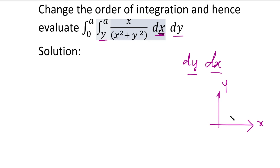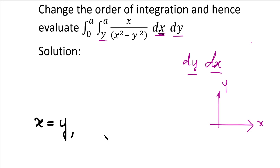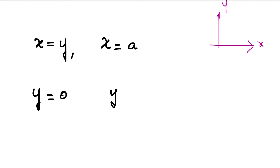Then we determine the x limit from the closed region. The vertical strip gives us the y limits, and moving the strip left and right gives us the x limits. The x lower limit comes from the left end and the upper limit from the right end. We have: y lower limit 0, y upper limit — from the strip's upper end. And x lower limit 0, x upper limit a.